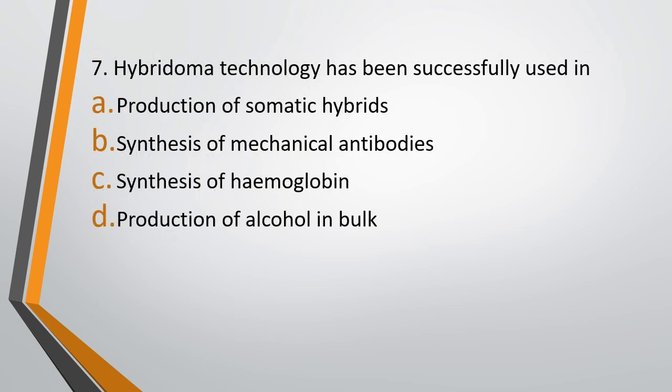Question 7. Hybridoma technology has been successfully used in: Option A, production of somatic hybrids. Option B, synthesis of monoclonal antibodies. Option C, synthesis of hemoglobin. Option D, production of alcohol in bulk. The correct answer is option B, that is synthesis of antibodies. Hybridoma technology is used for synthesis of monoclonal antibodies.